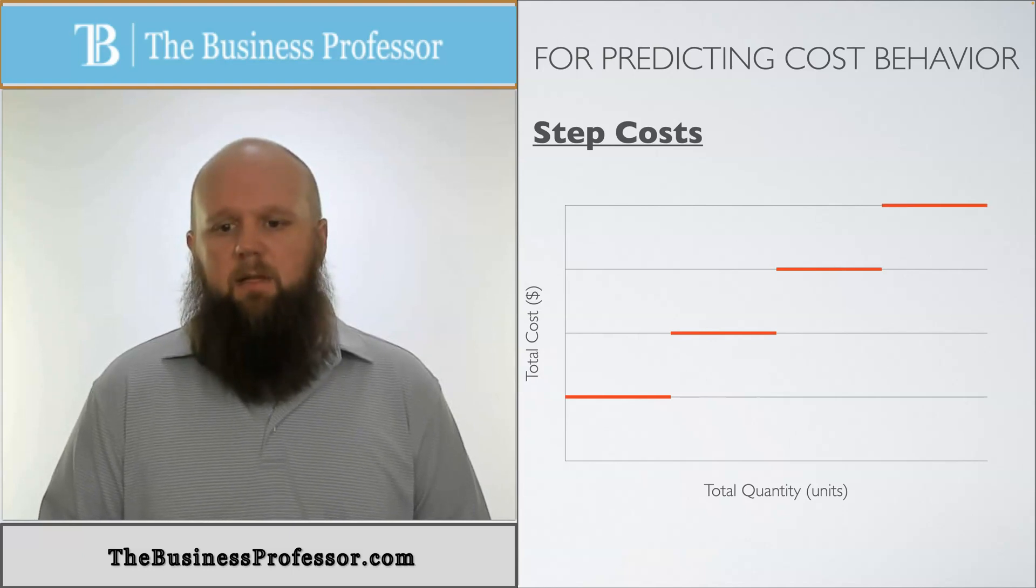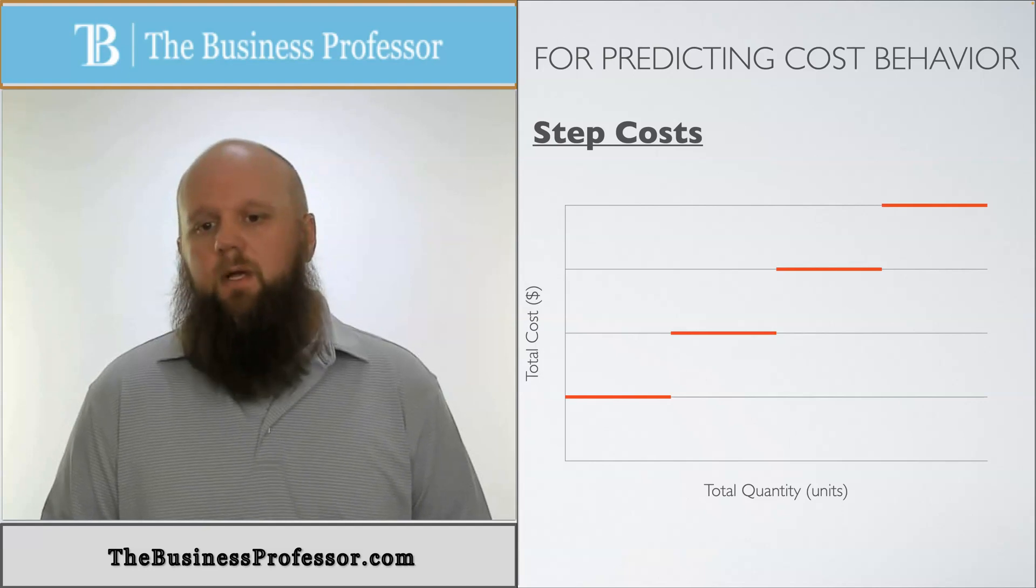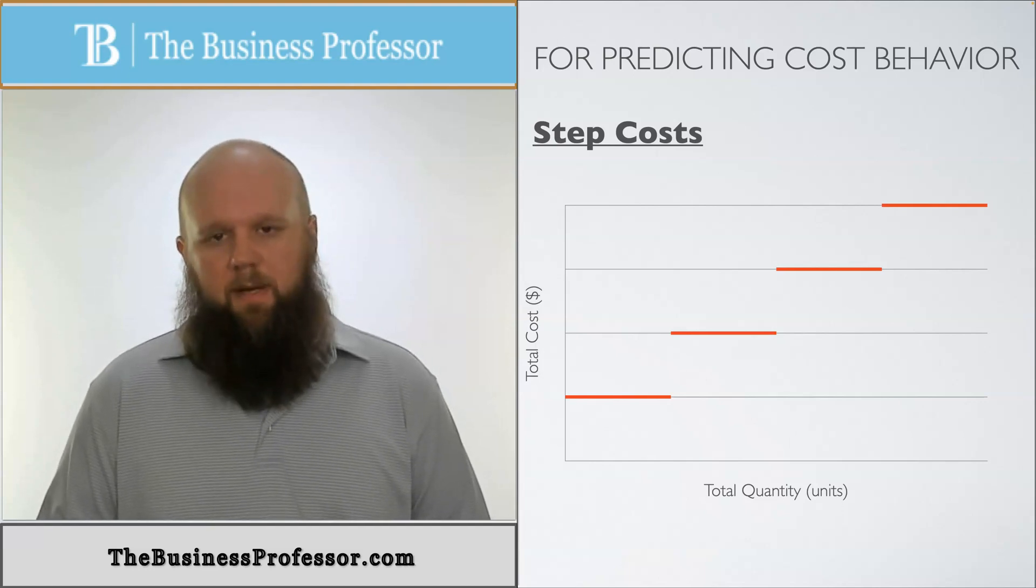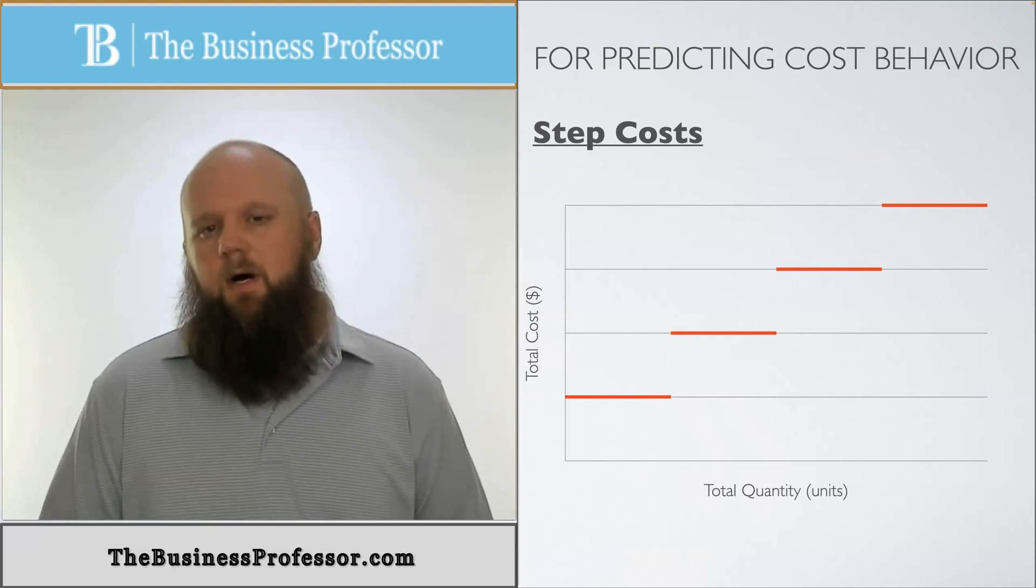You have the first range at the bottom and then the moment that level of activity passes its threshold, then it moves up. And then again once it passes this threshold it moves up again and then up again and so on and so forth. So that's what step costs are.